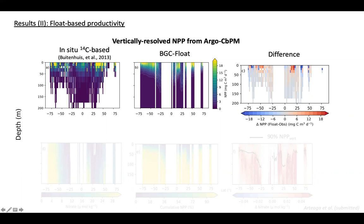Primary production tends to be a little bit higher at high latitudes and somewhat lower in the subtropics. The vertical layer with the highest productivity is constrained to about 50 meters in the water column, both in the observations and in the float-based estimates. On the right we have the difference between observations and floats — the full range is between minus 18 and plus 18 mg C per cubic meter per day, but most differences are constrained between minus 6 and plus 6 mg C per cubic meter per day, which is about 20% of the maximum seasonal difference in vertically resolved primary production at high latitudes.